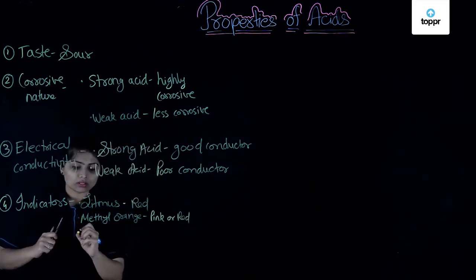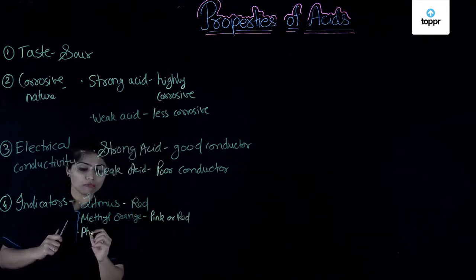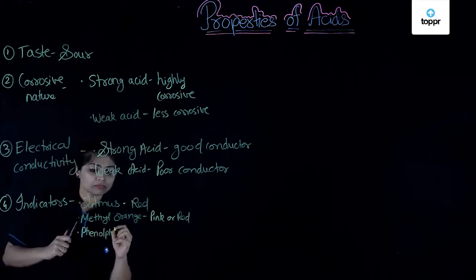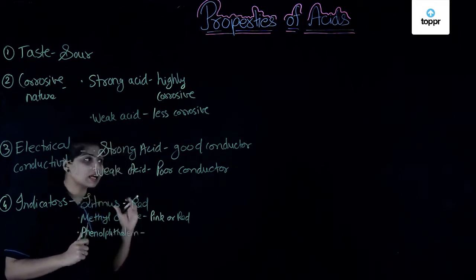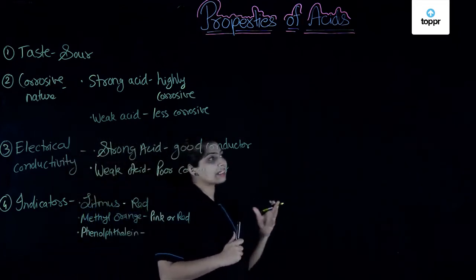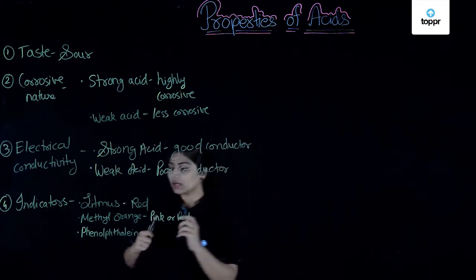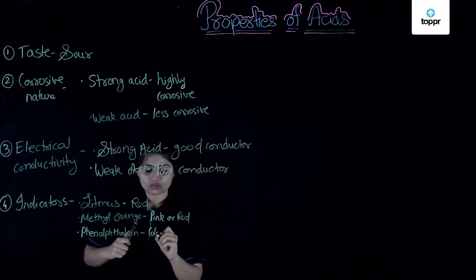And when we talk about indicator phenolphthalein, that is phenolphthalein. Phenolphthalein is a colourless substance. It is a colourless liquid. When it comes in contact with the acid, it remains colourless. There is no effect of acid on it.